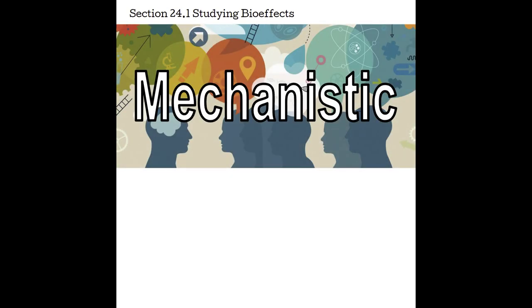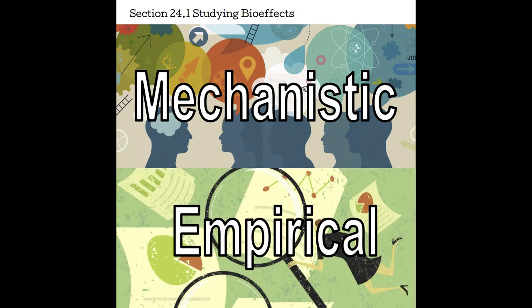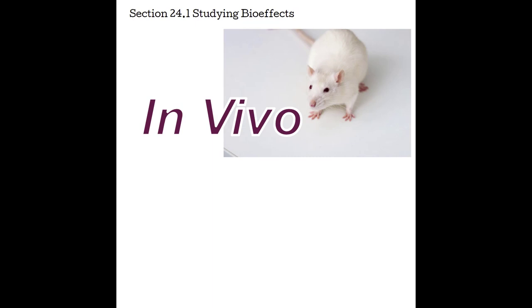Mechanistic studies use hypotheses to guess what their bio-effects are and then test the hypothesis, where empirical studies look for patients that have already underwent an ultrasound exam and their outcomes are reviewed. Another issue of studying bio-effects is how we can study them. In vivo, which means in a live specimen, human, or other test animals, makes it really difficult to have a controlled environment.